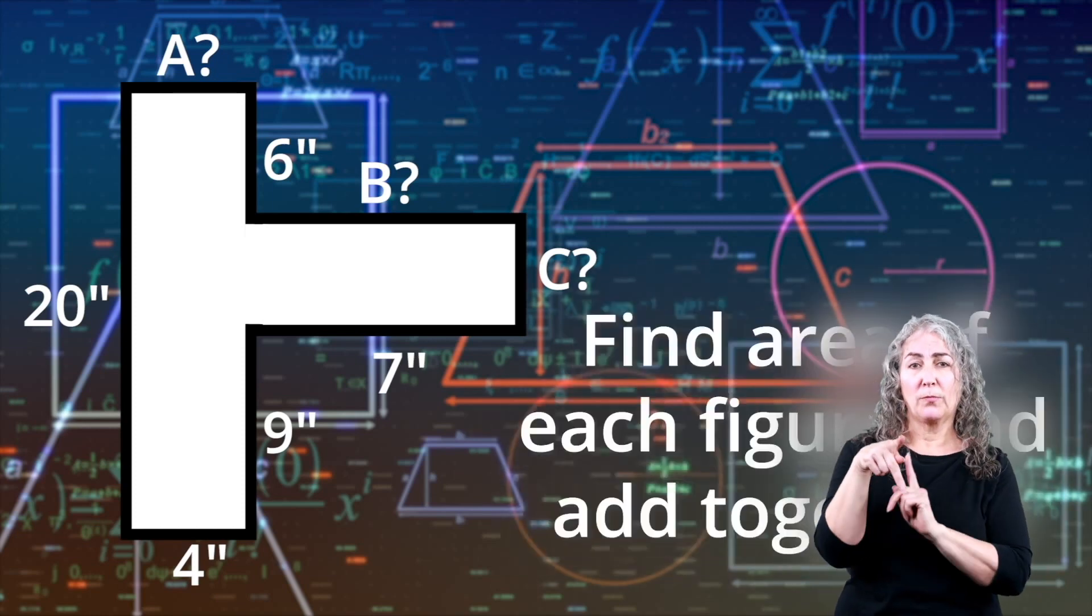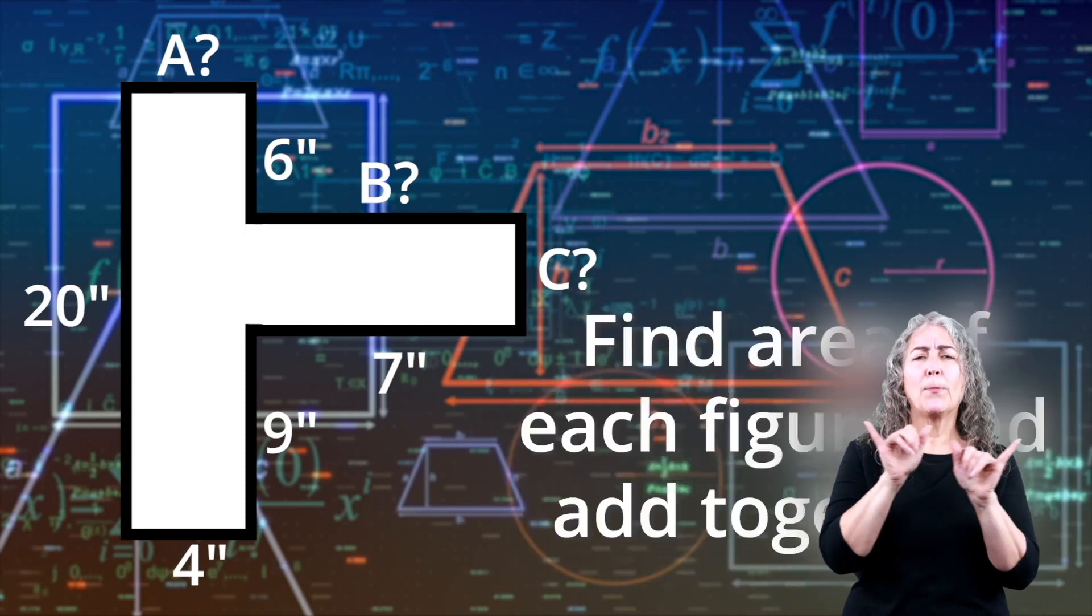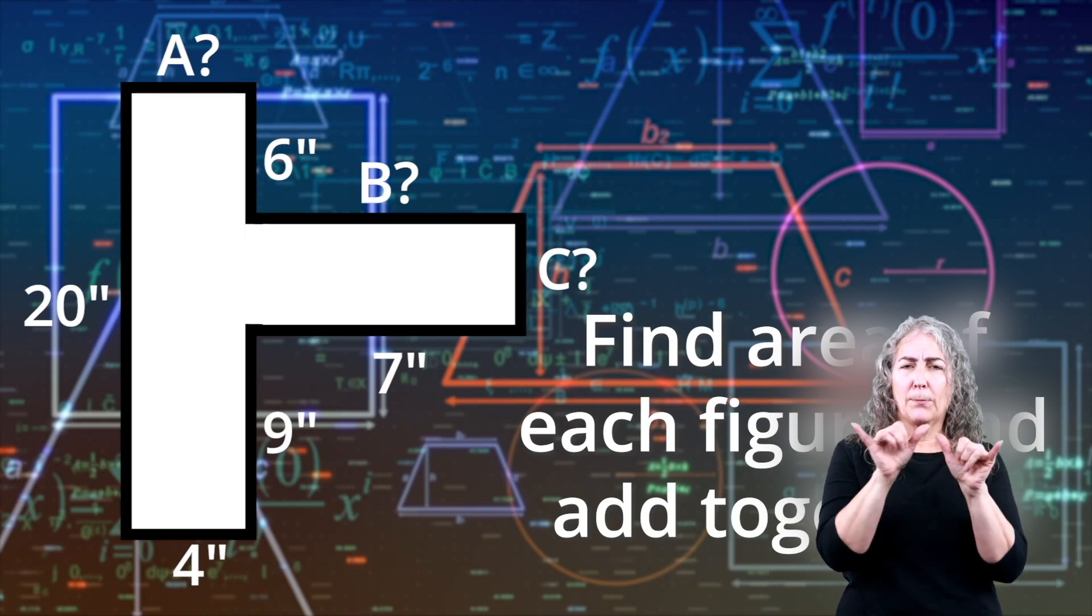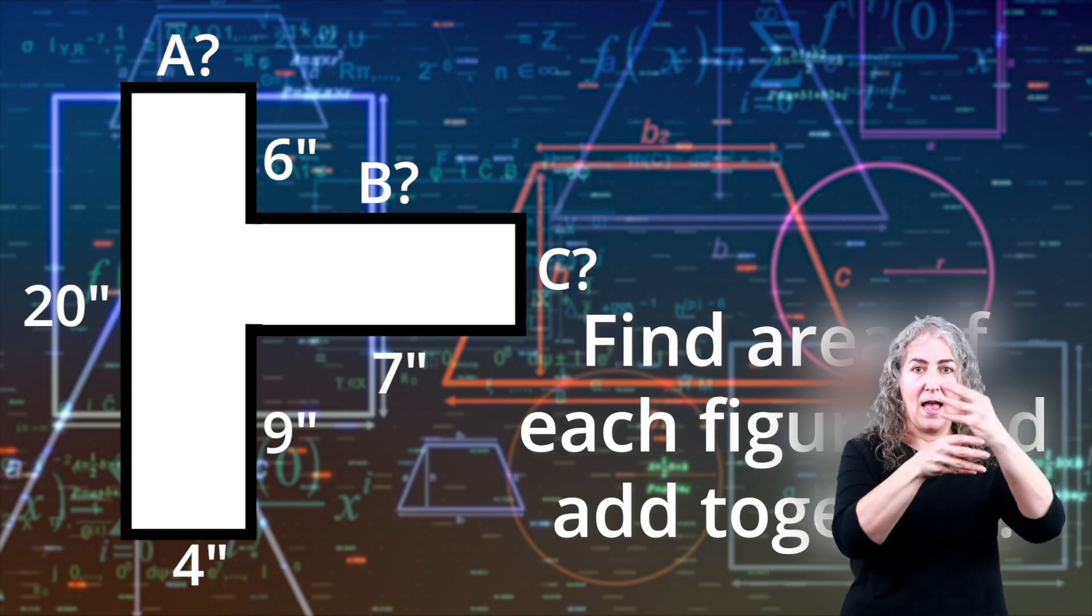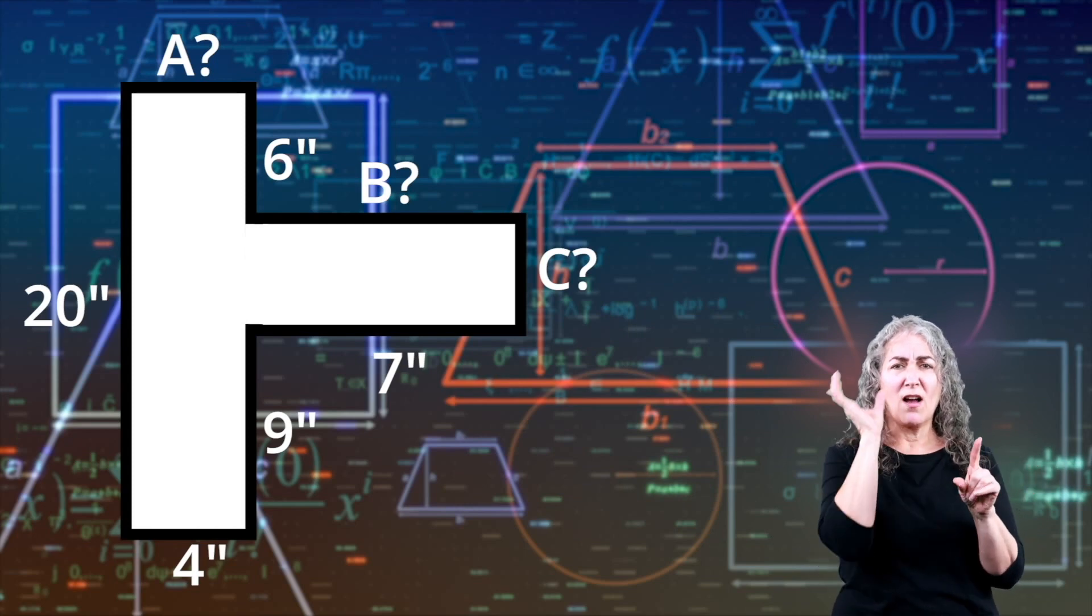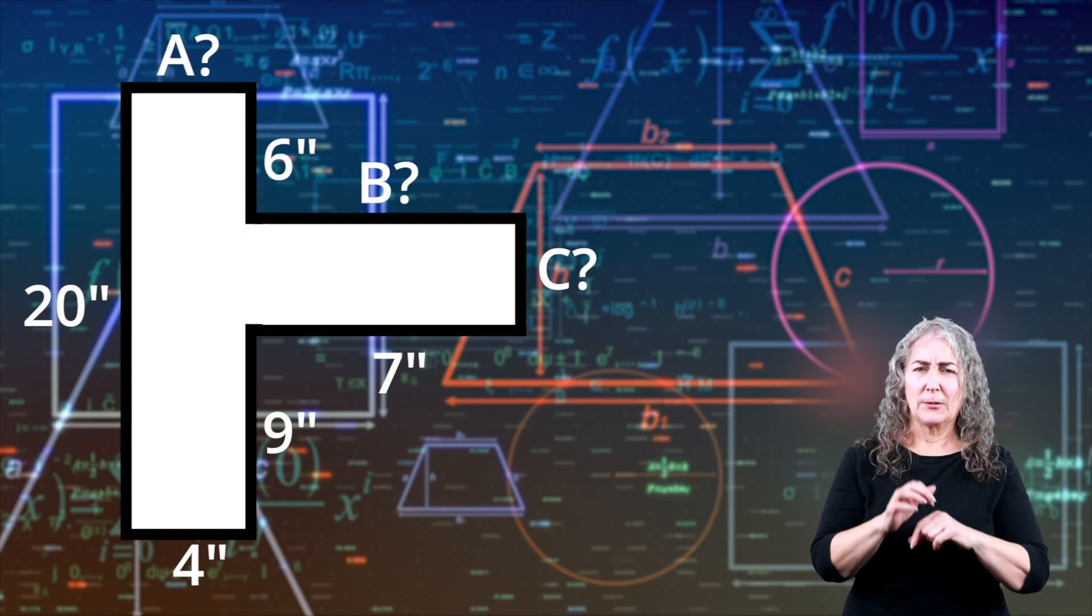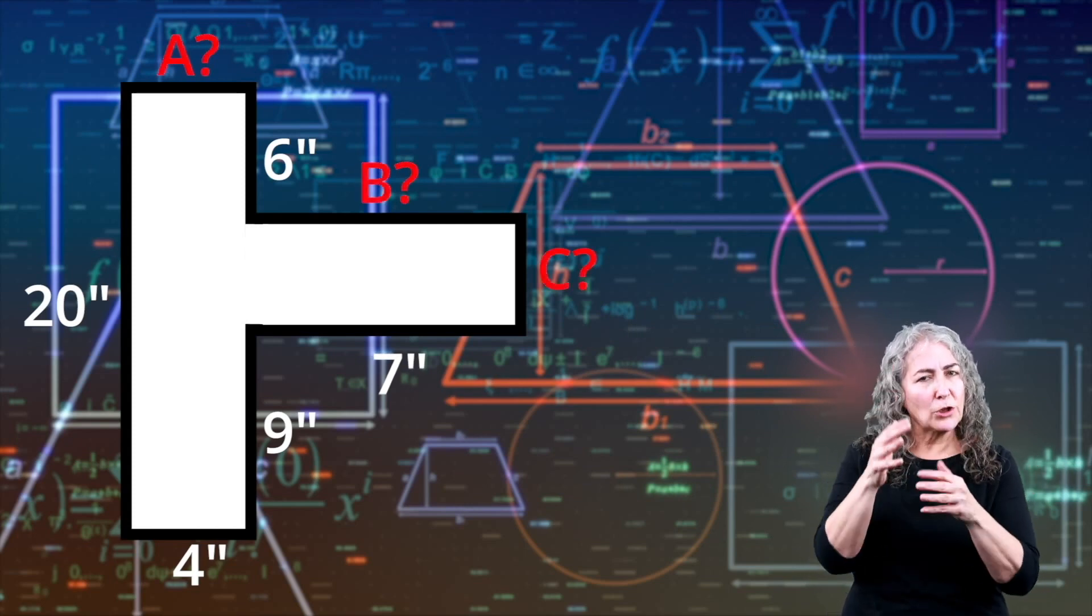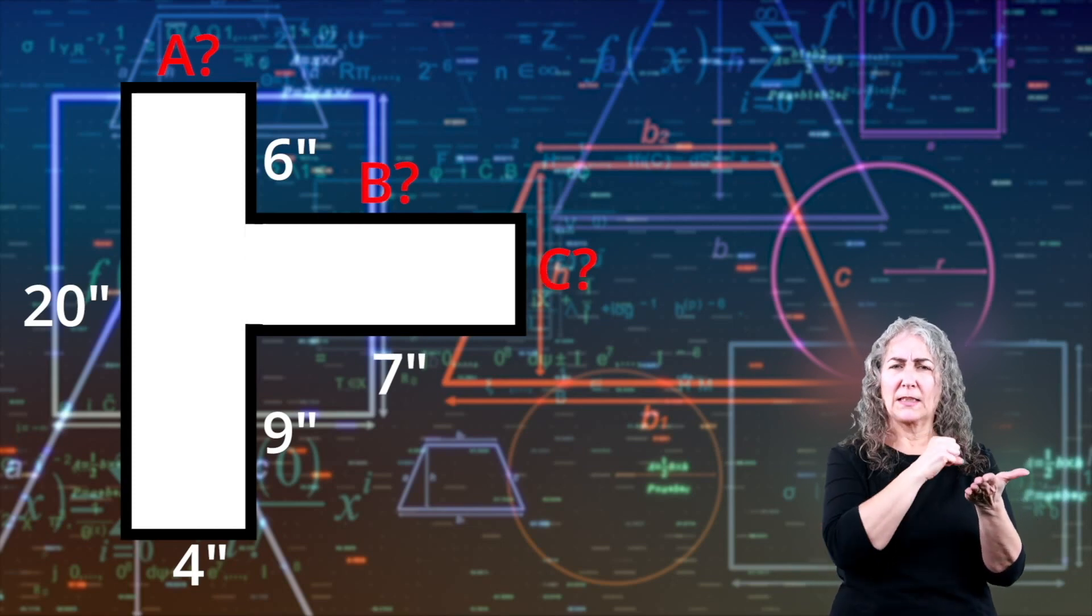To find the area of the shape, you have to find the area of each of the smaller figures and then add them together. Of course, sometimes, finding the measurements of an odd shaped figure can be tricky when you have limited information. Notice that there are missing lengths?